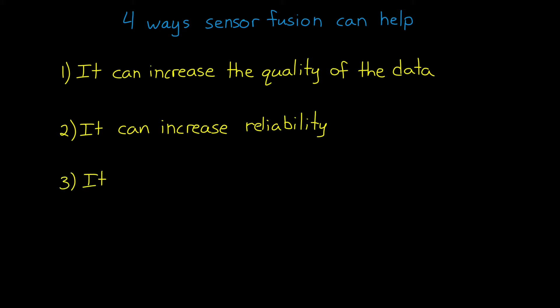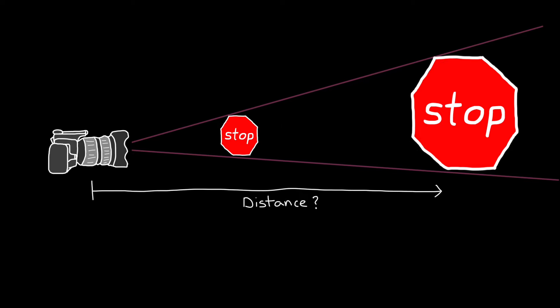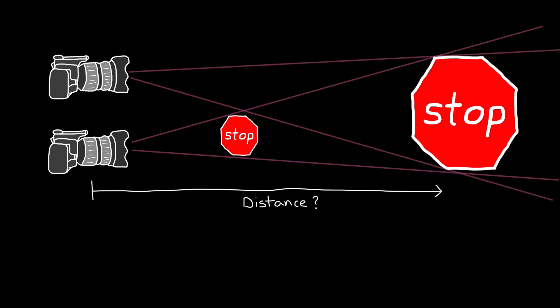The third benefit of sensor fusion is that it can be used to estimate unmeasured states. Now it's important to recognize that unmeasured doesn't mean unmeasurable. It just means that the system doesn't have a sensor that can directly measure the state we're interested in. For example, a visible camera can't measure the distance to an object in its field of view. A large object far away can have the same number of pixels as a small but close object. However, we can add a second optical sensor, and through sensor fusion extract three-dimensional information.